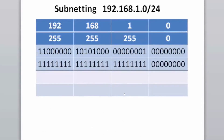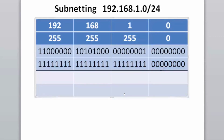Let's start with a classic class C network: 192.168.1.0 with a slash 24 or 255.255.255.0 subnet mask. If we want to subnet this network, we need to go into the subnet mask in binary and borrow bits from the host portion of the address. This is done from left to right, so we take the first zero on the left and change it to a one.